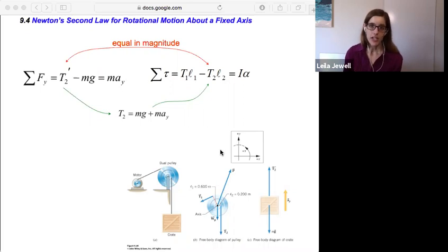Then the only torques acting on our pulley are tension one pulling on it at this lever arm, L1, and tension two, which is also slightly offset from the axis at L2. So we write those up here. The torque due to tension one is tension one times L1. The torque due to tension two is tension two times L2.